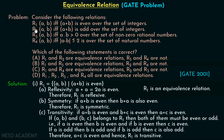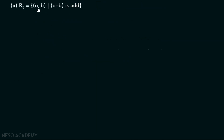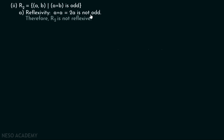Now let's check R2, defined over the set of integers as the set of all ordered pairs (a, b) such that a plus b is odd. R2 is not reflexive because (a, a) must belong to R2, meaning a plus a must be odd. But a plus a equals 2a, and 2a is not odd. Therefore, R2 is not reflexive, and hence R2 is not an equivalence relation.